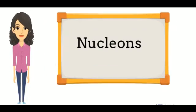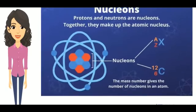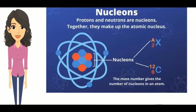Nucleon is used to designate both protons and neutrons in the nucleus. The mass number tells the number of nucleons.